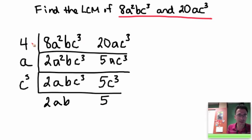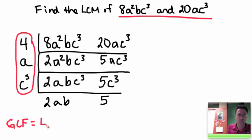If you recall from the last lesson, the numbers here on the left actually form the GCF. So the GCF in this particular case is 4ac cubed.